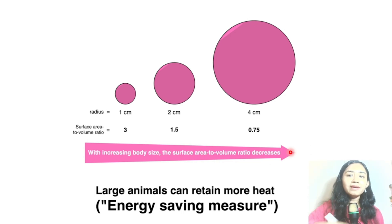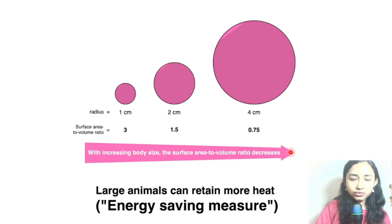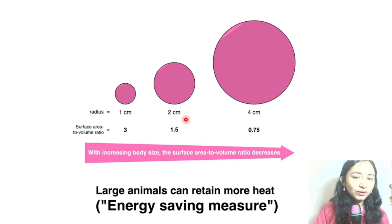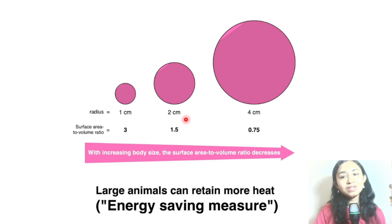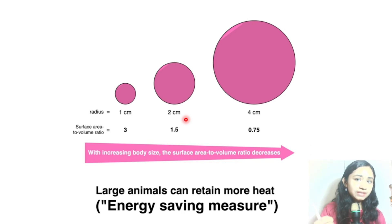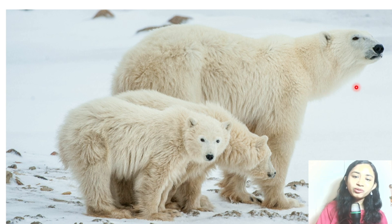In cold temperatures, animals need to be large in size so that their surface area to volume ratio is minimal, allowing them to lose minimal heat and retain it for survival. Bergman's Rule states: when in cold temperature, animals tend to increase in body size so that they retain body heat for survival. Here you can see the polar bears — the mother and her cubs.